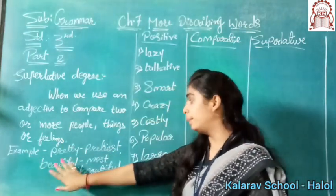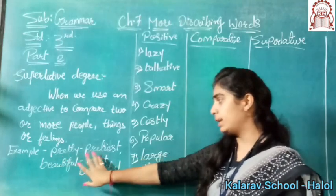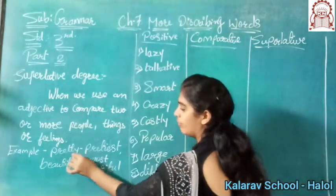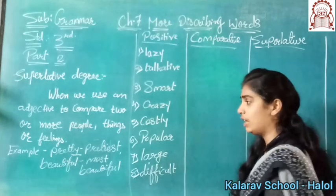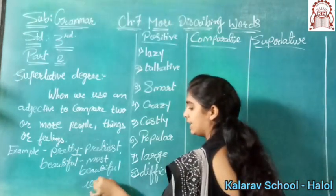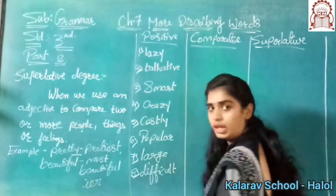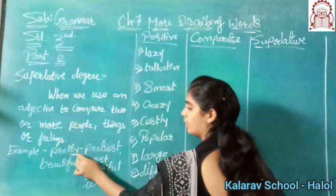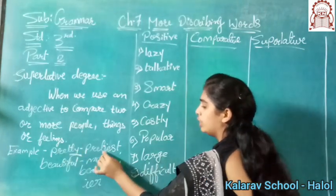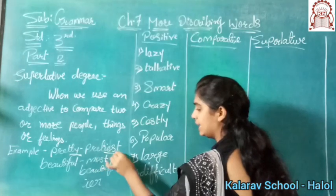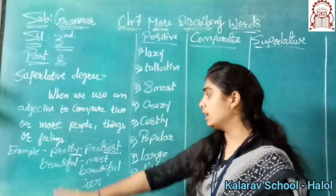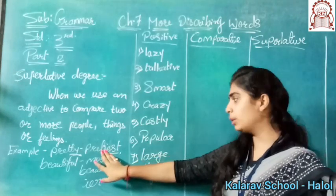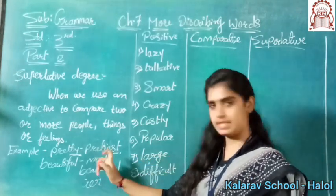Your examples are: pretty, prettiest. Now see here. In the comparative degree, when the word ends in Y, at that time we use IER. And in superlative degree, when it ends in Y, we use IEST. So here: pretty, prettier, and superlative will be prettiest. Understand?